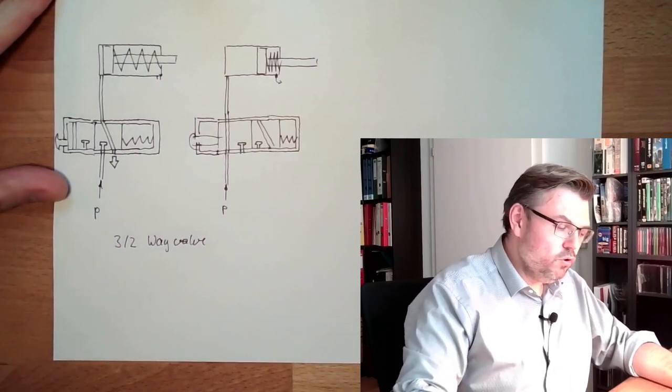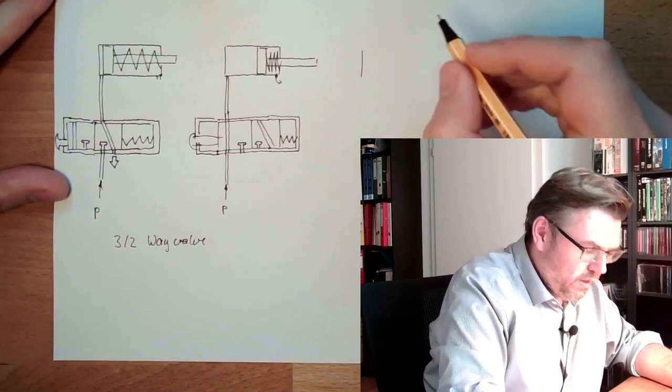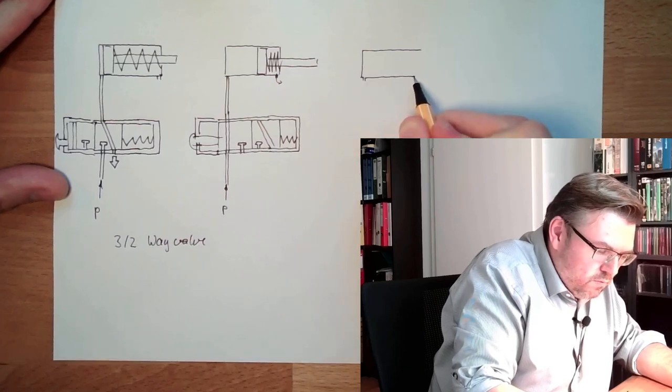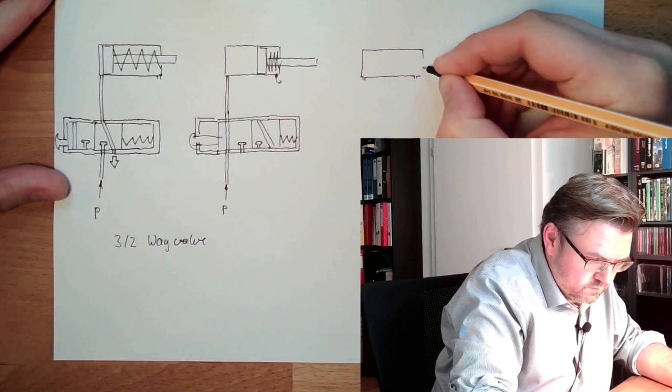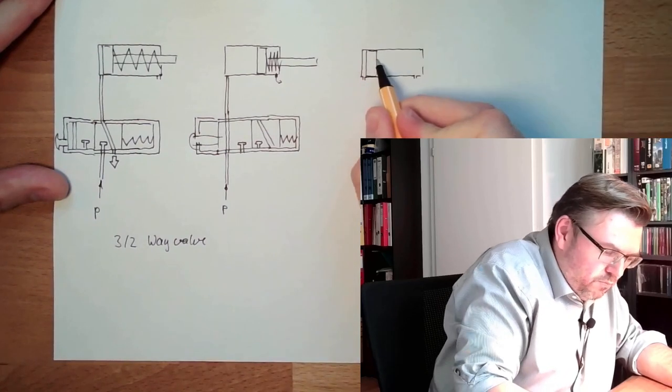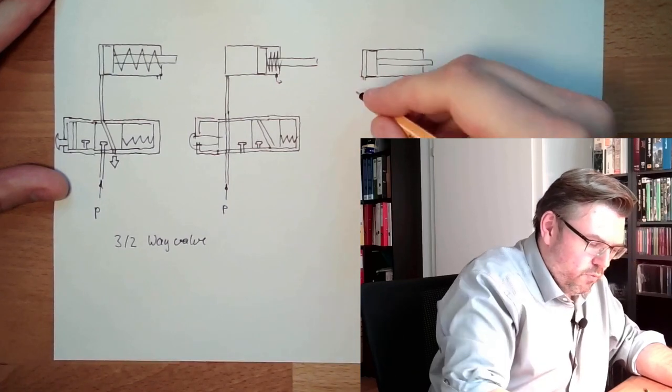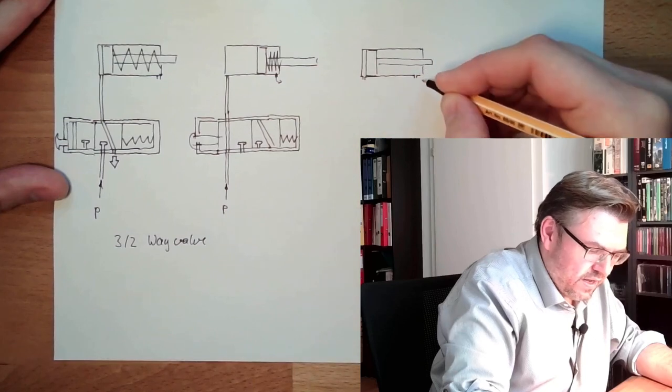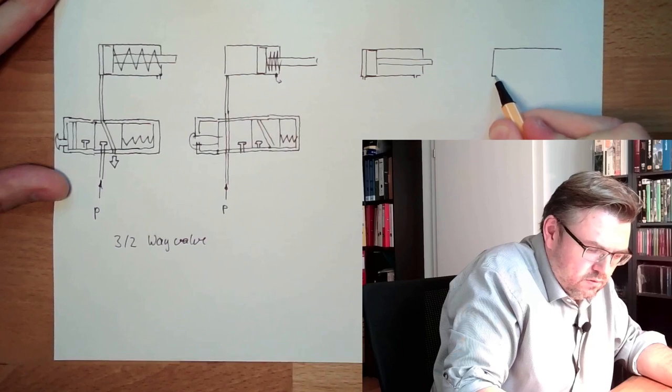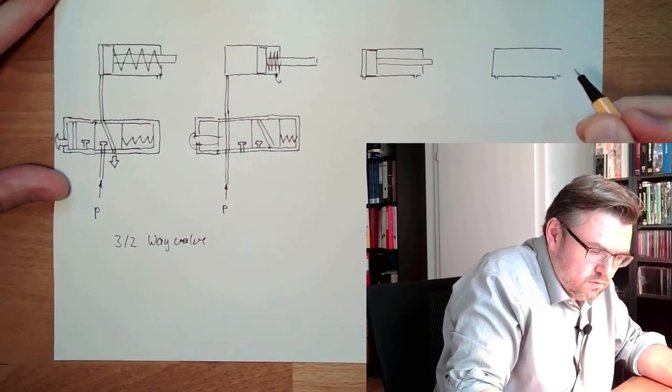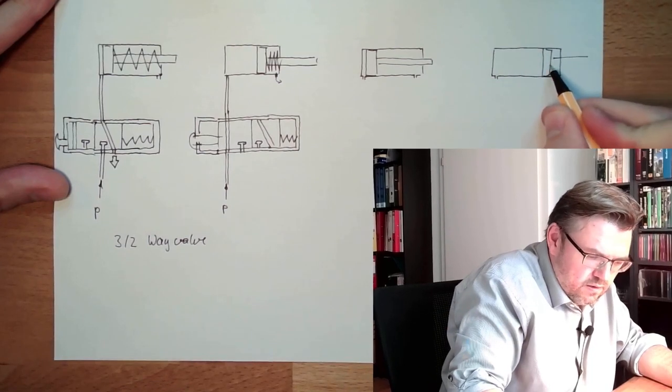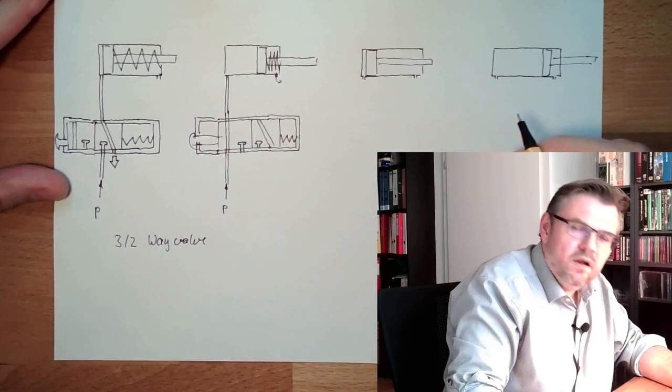Let's see how it would look like for a double-acting cylinder. Well, if we have a double-acting cylinder, we have two connections here. One, two. If we want to have it on the left-hand side, so the piston rod is inside, we have to exhaust this and put pressure here. If we want to have it exactly the other way around, so that the piston is on the right-hand side, we have to put pressure here and exhaust here.